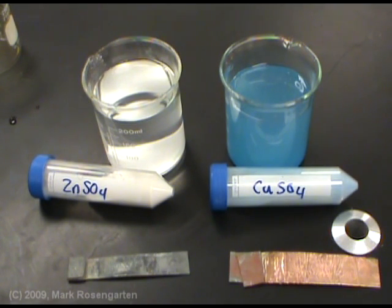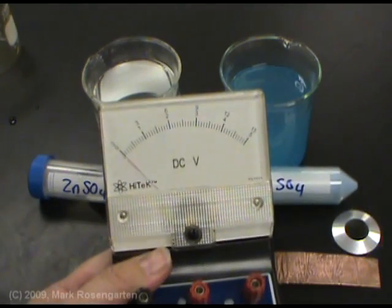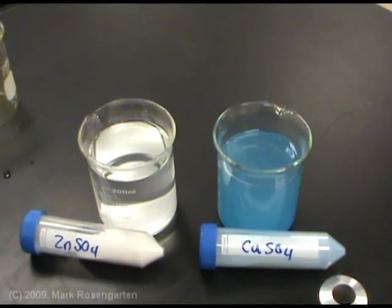What if you could take those electrons and actually use them to power a device, something that we call a load? To accomplish this, what you need to do is put the zinc and copper into two different containers.